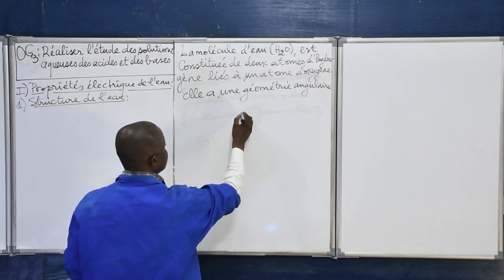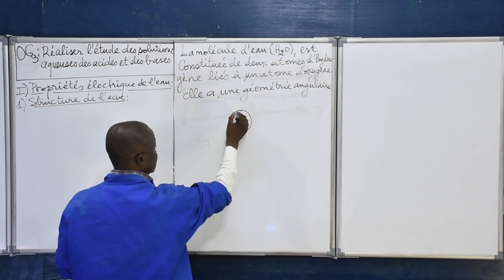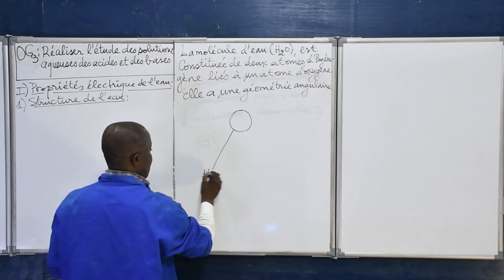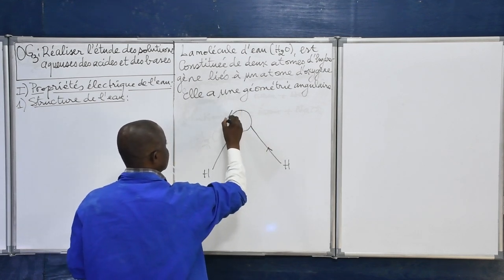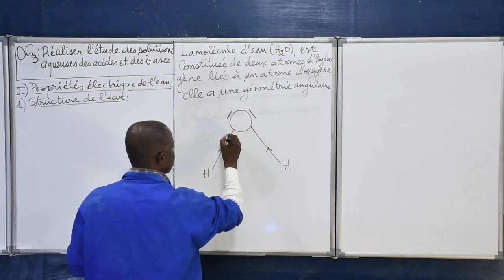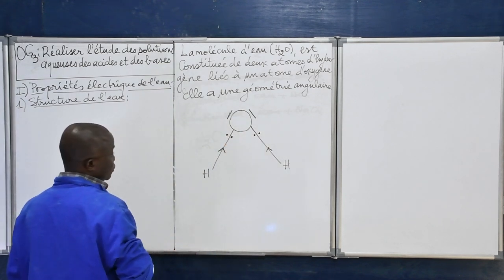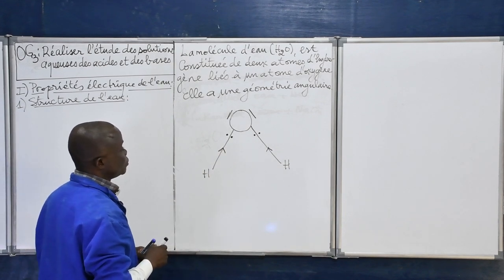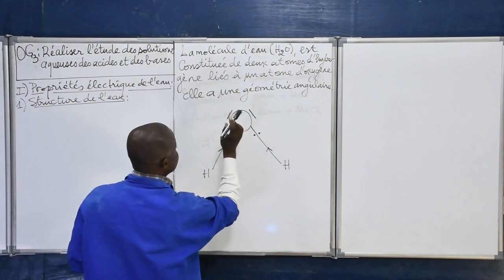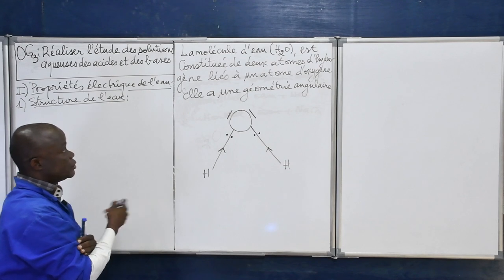La molécule d'eau est constituée d'un atome d'oxygène lié à deux atomes d'hydrogène. On a deux doublets non liants et les électrons formant les liaisons covalentes entre chaque atome d'hydrogène et l'atome d'oxygène. Ce doublet est plus proche de l'atome d'oxygène parce que l'atome d'oxygène est plus électronégatif que l'atome d'hydrogène.